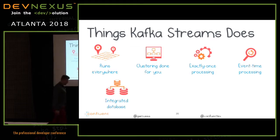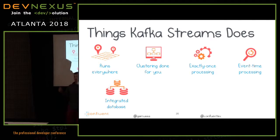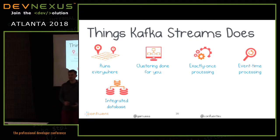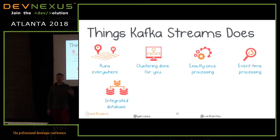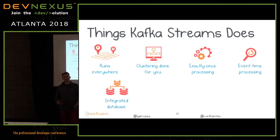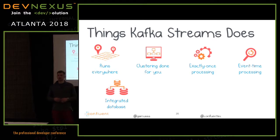Where do we store state? Usually in some external database — one that infrastructure guys run, or one you run yourself in containers. The Kafka Streams framework has a built-in database to store processing state, and this database survives failures. When your application fails and restarts, state is restored from the local database. Kafka Streams uses RocksDB, which provides disk persistence and in-memory capabilities. It's written in C++ but has good compatibility with Java.